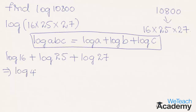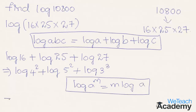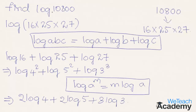Now we can write log 16 as log 4 squared, and log 25 can be written as log 5 squared, plus log 3 cubed, which is equal to 27. By using the formula log a raised to the power m equals m log a — the law of logarithm of a power — we can write this as 2 log 4 plus 2 log 5 plus 3 log 3. So the value of log 10800 is 2 log 4 plus 2 log 5 plus 3 log 3.